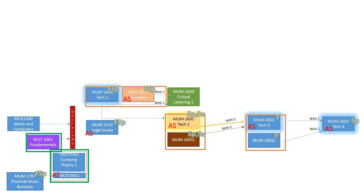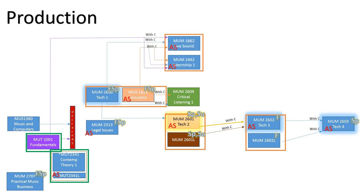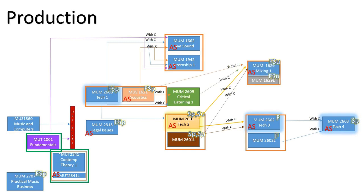That's everything that is the same for all MIRA subplans. Now let's see what courses differ in each plan. For the Production subplan, there is a Live Sound MUM 1662 class, which has a co-requisite of Internship 1, MUM 1942. These courses deal with live sound elements of setting up equipment including microphones, mixers, monitors, and more in various settings. It is taught at the Palladium in downtown St. Pete. Internship 1 is a sort of internal SPC internship where you will gain hours working touring events at the Palladium, as well as setting up and tearing down audio equipment for MIRA rock and R&B ensembles.